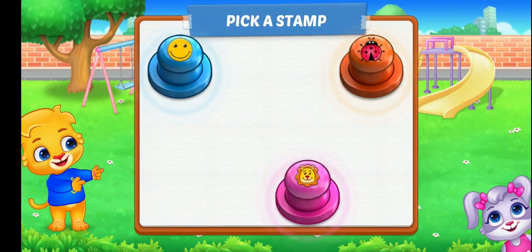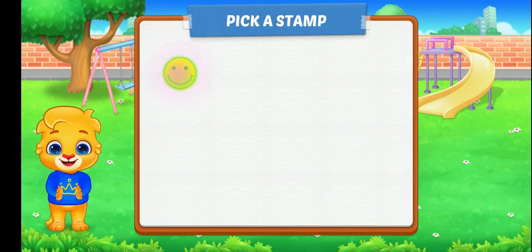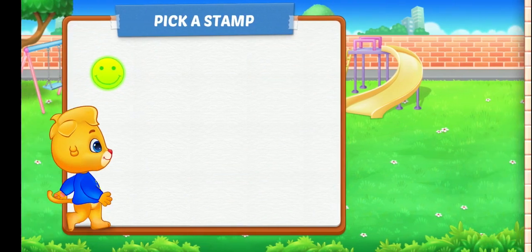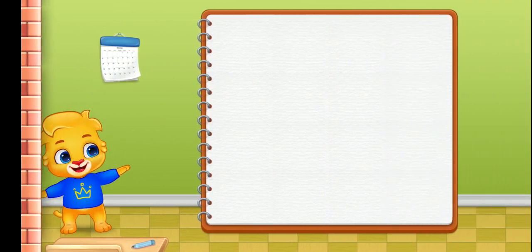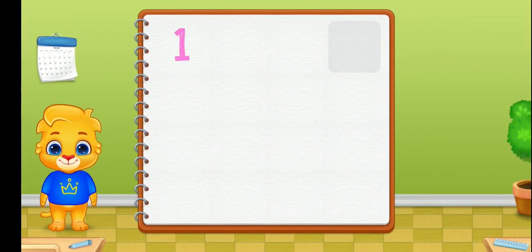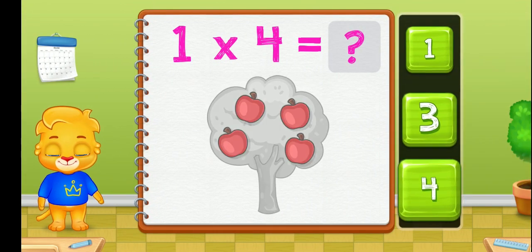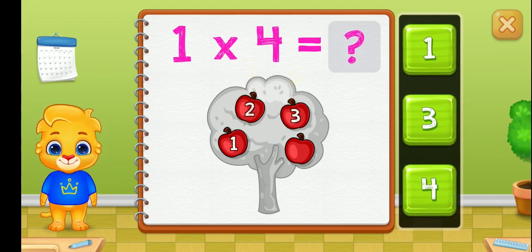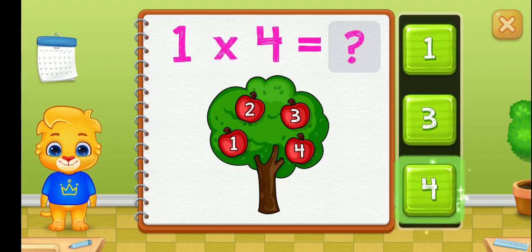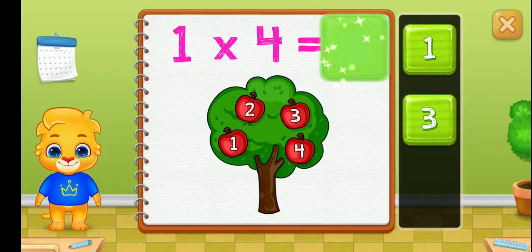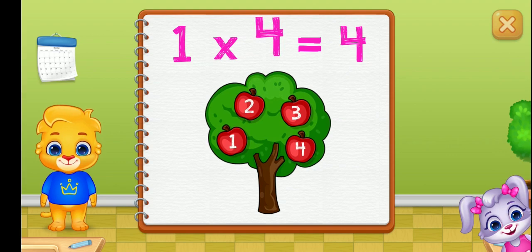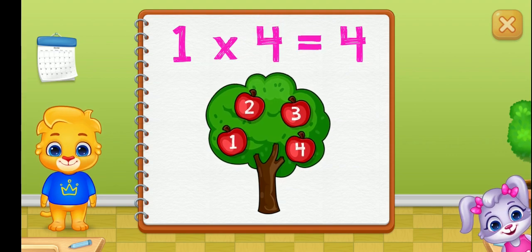Pick a stamp. One, two, three, four, five, six, seven, eight. One, two, three, four. One group of four equals four.